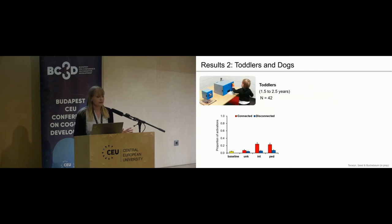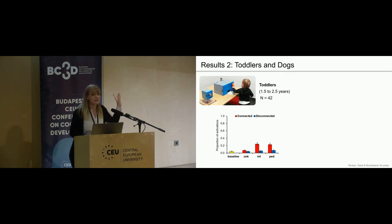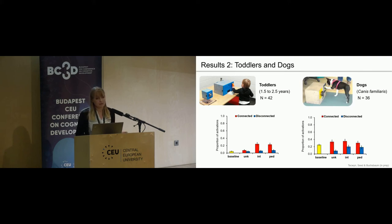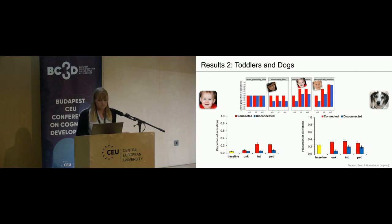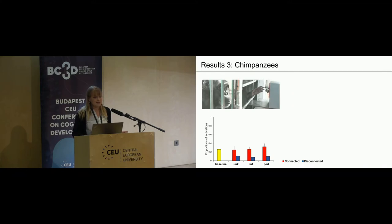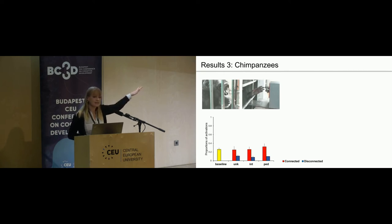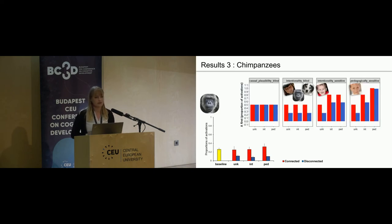The toddlers have overall very low copying rates of action A—they usually go straight to B and the reward. But in the intentional and pedagogical conditions, they show more copying than in the unknowing condition. The dogs look very much like the capuchin monkeys—no sensitivity to intentionality, but differentiating causation. When compared to the model, toddlers are best explained by the intentionality-sensitive model, and dogs by the intentionality-blind model. The chimpanzees also look very much like the monkeys and dogs—they do not differentiate between intentionality conditions but do consider the causal factor, and are also best explained by the intentionality-blind model.